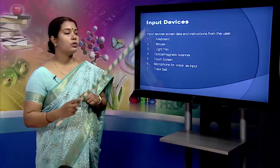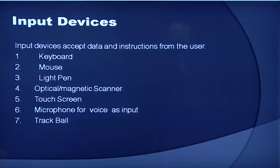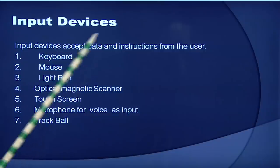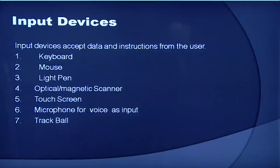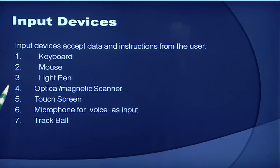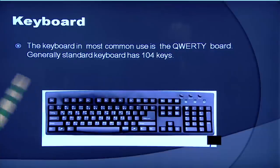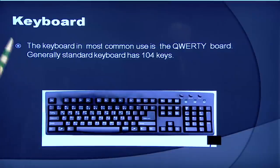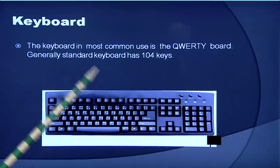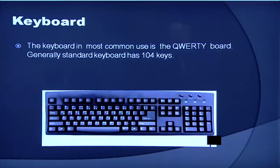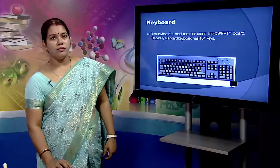Now let us go to the input devices. Input devices accept data and instructions from the user. We have different forms of input devices: keyboard, mouse, light pen, optical/magnetic scanners, touch screen, microphone and track balls. The first one is the keyboard. The keyboard in most common use is the QWERTY board. Generally, a standard keyboard has 104 keys. Then we have a mouse. A mouse is an electromechanical handheld device used to control the moving icons on the Windows operating system. You can use it to start programs and choose options, but you cannot use a mouse to enter text.